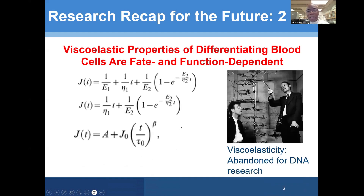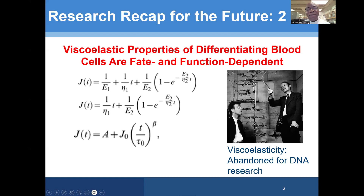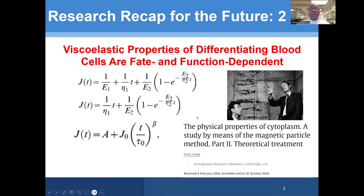It turns out that this work on viscoelasticity of individual cells was first started by Francis Crick of DNA fame. They received the Nobel Prize for finding the structure of DNA in 1962 for work done in 1953. And it was in 1950 that they worked on viscoelastic properties of individual cells, but didn't think they were important for cell function and abandoned it. That's where we took off from, in the same laboratory.